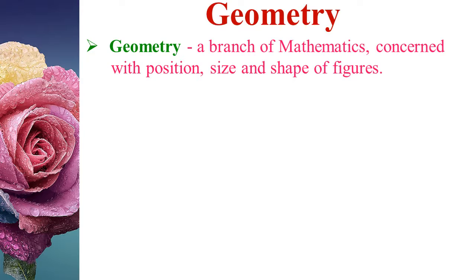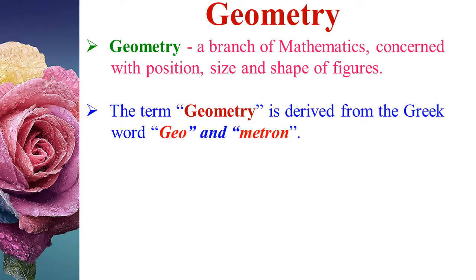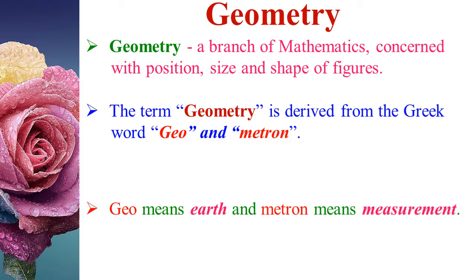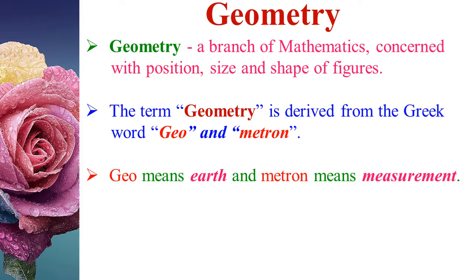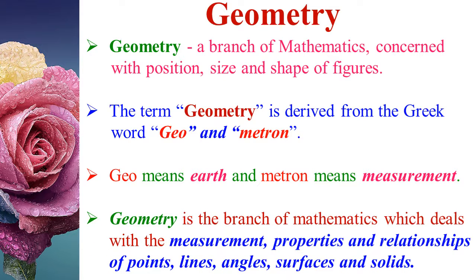Geometry is a branch of mathematics concerned with position, size, and shape of figures. The term geometry is derived from the Greek words geo and matron, where geo means earth and matron means measurement. Geometry is the branch of mathematics which deals with the measurement, properties, and relationships of points, lines, angles, surfaces, and solids.